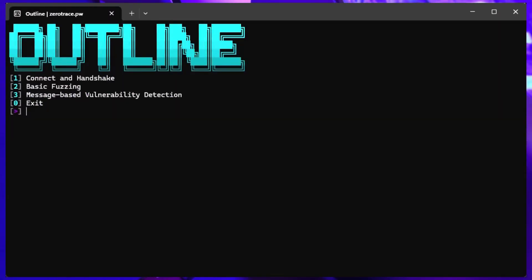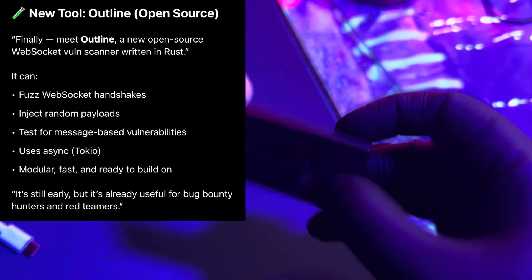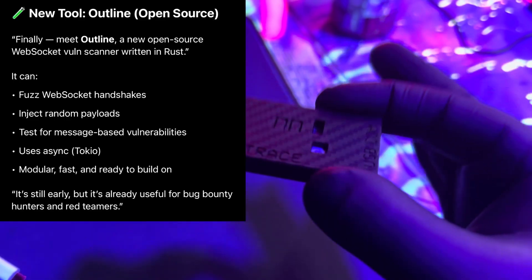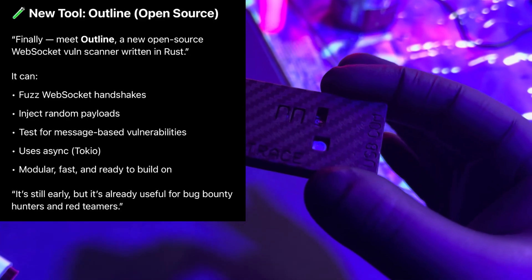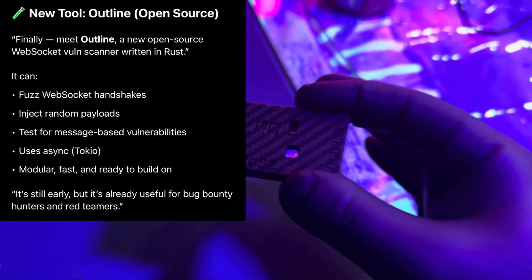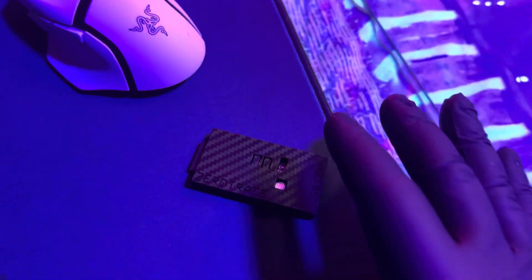Now for a new free product they're launching: the Outline. This is an open source tool — a web socket vulnerability scanner written in Rust. It can fuzz web socket handshakes, inject random payloads, and test for message-based vulnerabilities. It uses async Tokio, is modular, fast, and ready to build on.